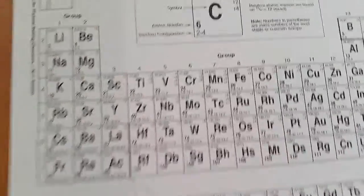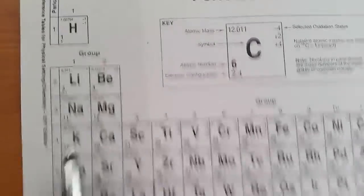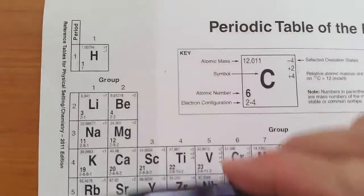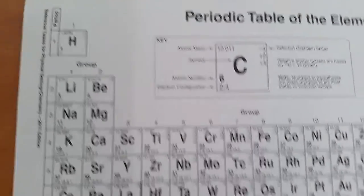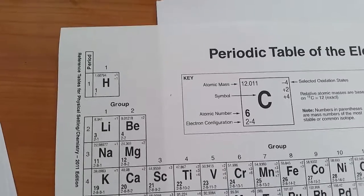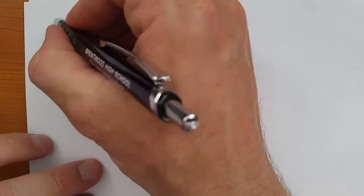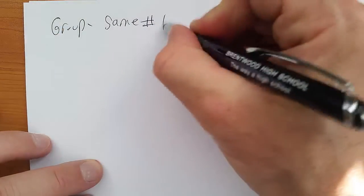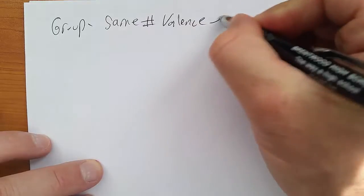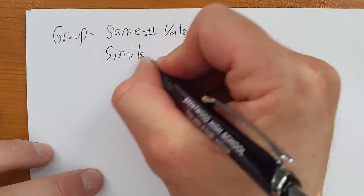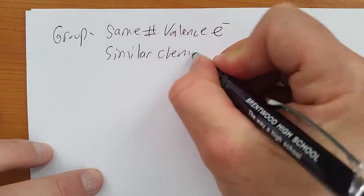Now, elements are also arranged into periods, right, which is the rows, and groups, which is the columns. Now you have to remember that elements in a group have the same number of valence electrons. So elements in a group have the same number of valence electrons and similar chemical properties.